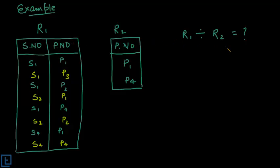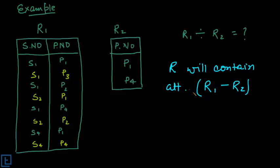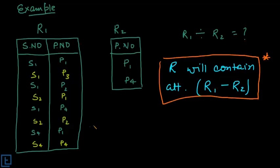And we have to divide R1 by R2. So the first point to notice, which I forgot to mention earlier, is that the result R will contain attributes R1 minus R2. So it will only contain the attributes which are present in R1 but not present in R2. This is a very important point.